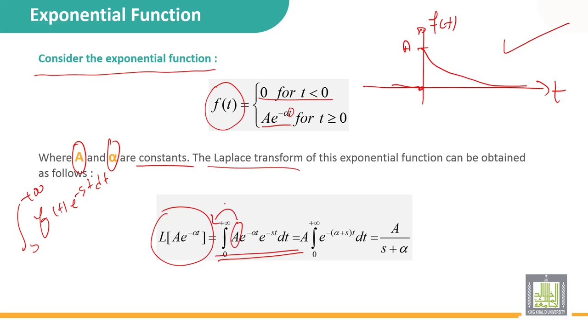It can be removed out: A multiplied by the integral from 0 to plus infinity of e^(-(α+s)t) dt, equal to A over (s + α).